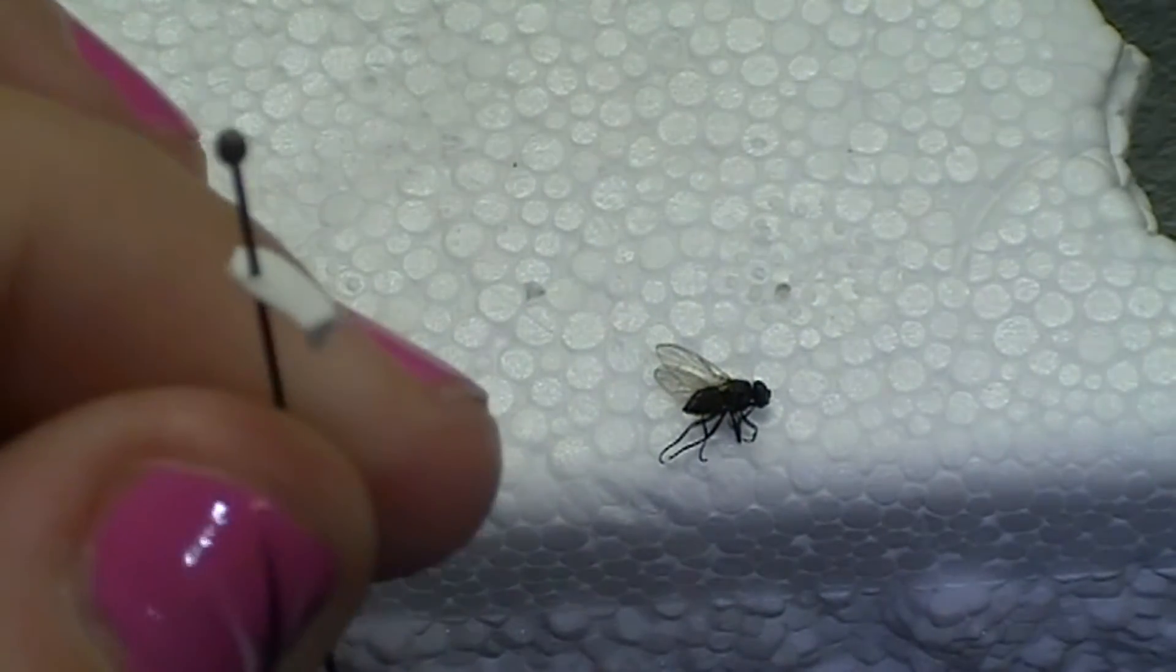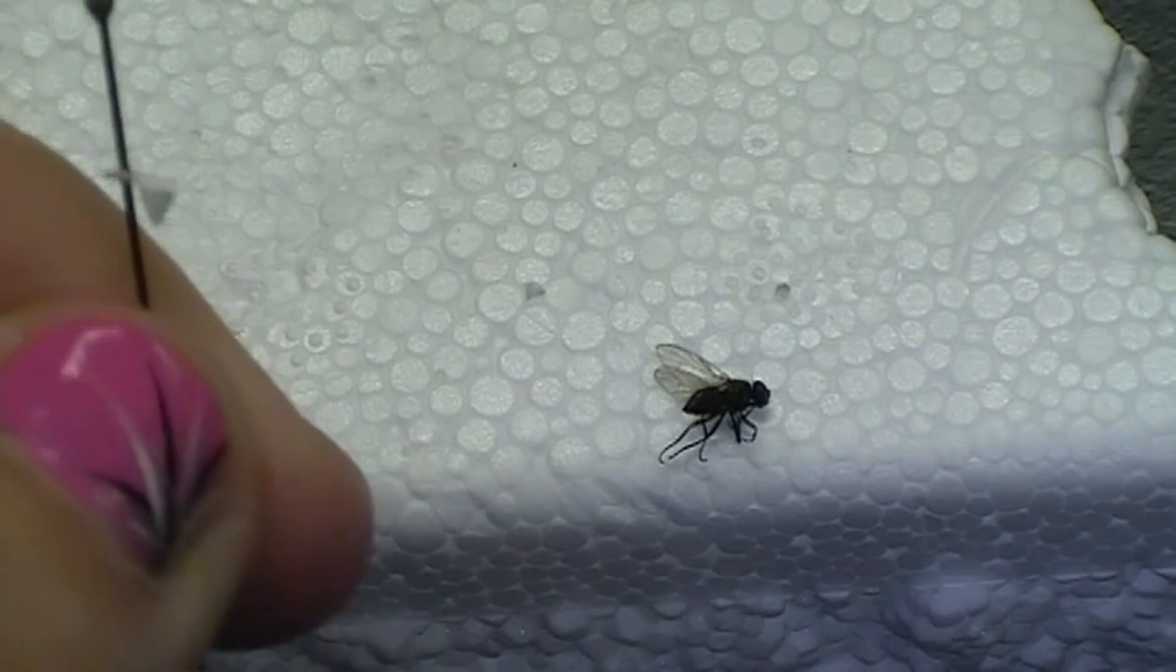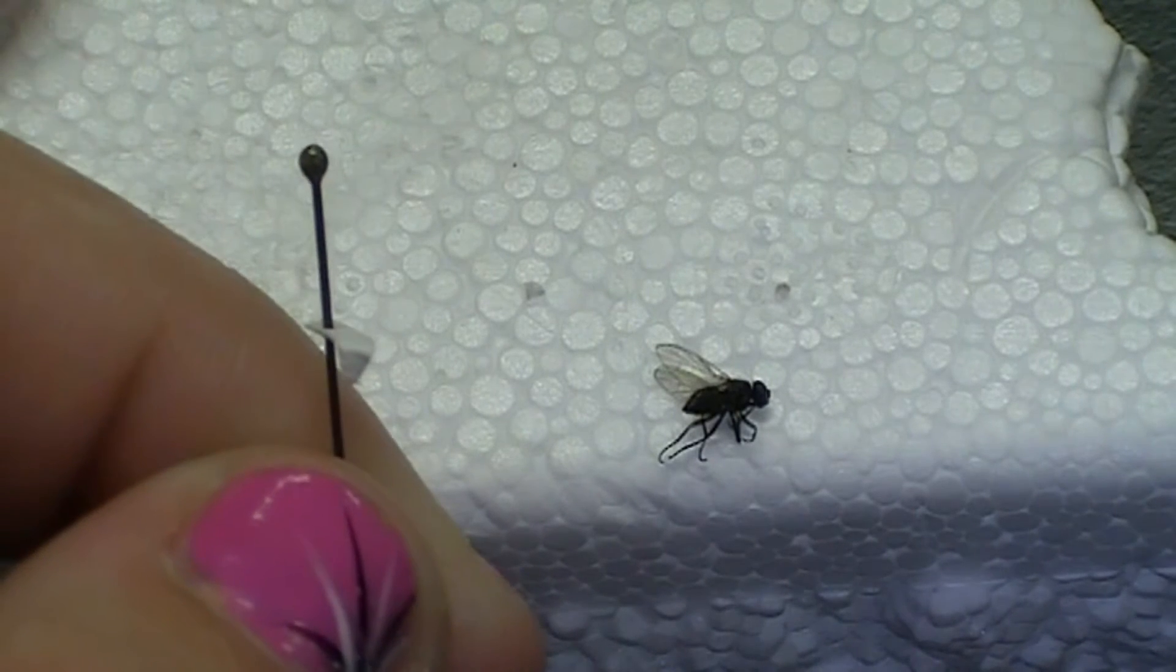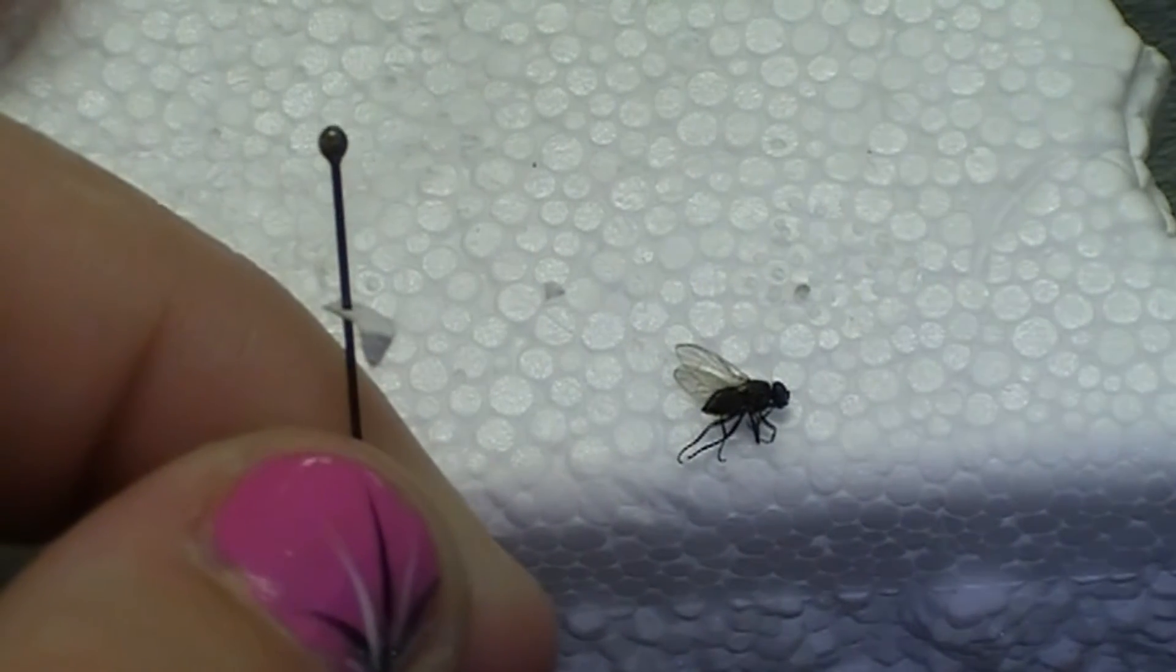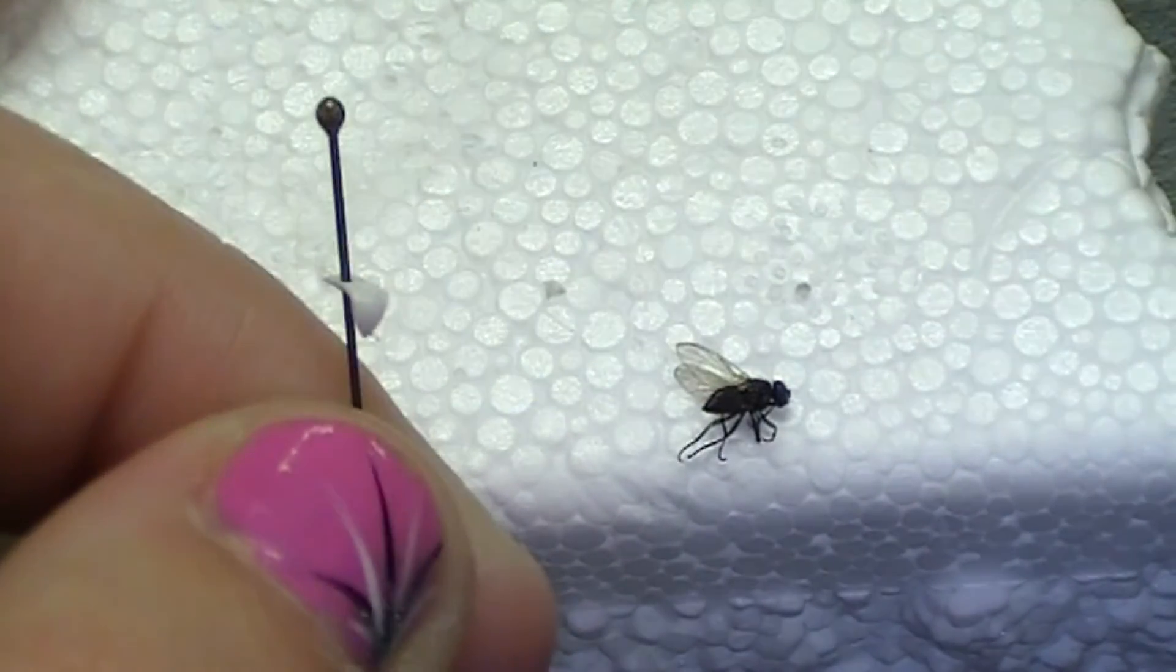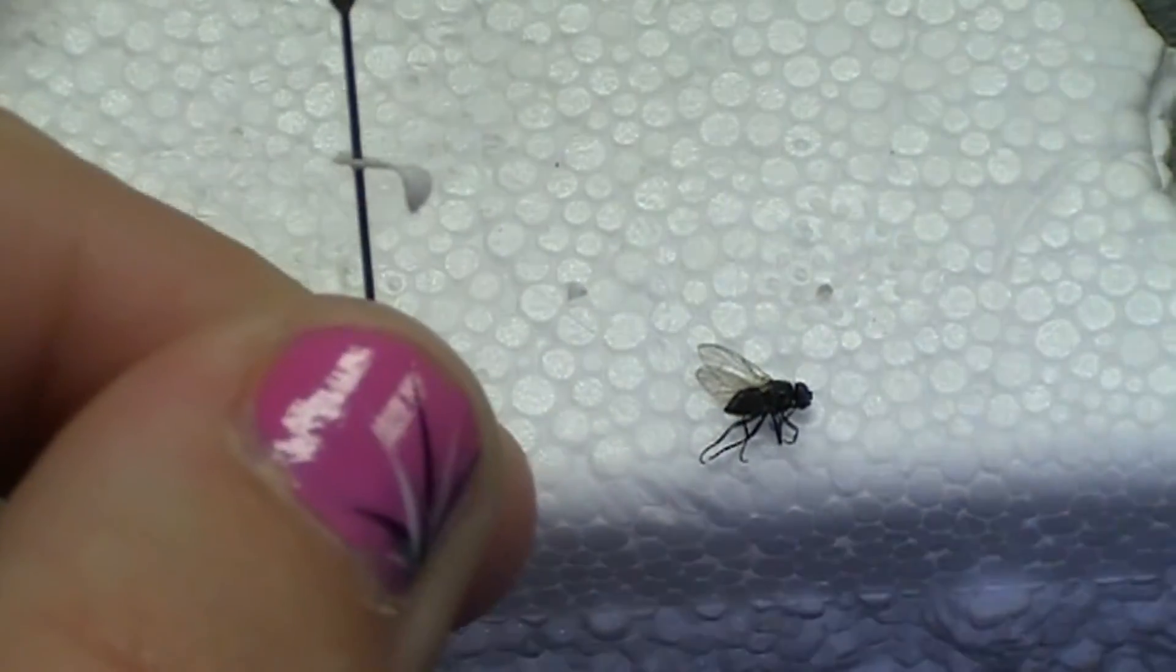Once you have your insect in position and your point is all folded, you can add a little bit of glue to the point. If you're using Elmer's glue, you don't need very much. Like this is too much, so I'm going to wipe some off.